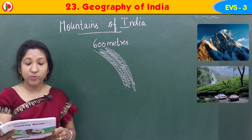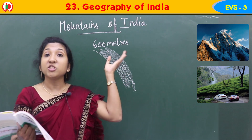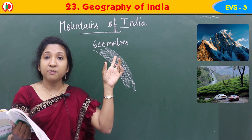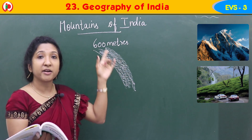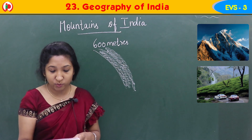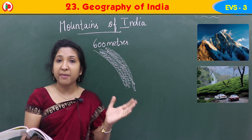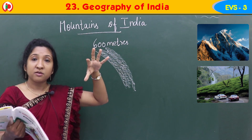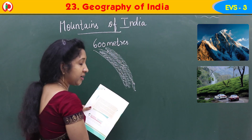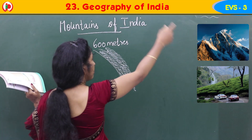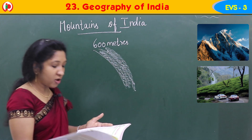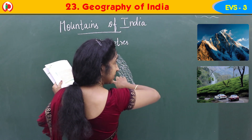In India, the northern part is covered with the great Himalayas. If we see the map of India, the northern part has the great Himalayas, which is the highest mountain range in the world. It stretches from north-west to north-east. In the India map, north is the upper part, south is the bottom, and the Himalayas cover that north-west to north-east stretch.